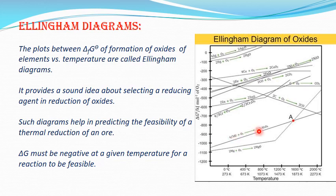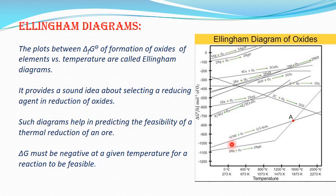So out of Al2O3 formation and MgO formation at 800 degree Celsius, which reaction is faster? By looking at the delta G value, the answer is Mg to MgO, because at 800 degree Celsius the more negative delta G value is minus 1000. So reaction feasibility is more for Mg to MgO.